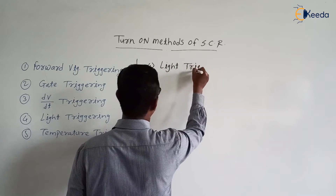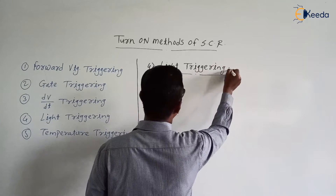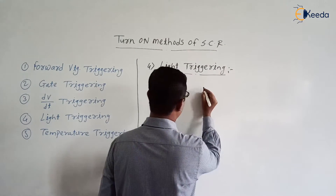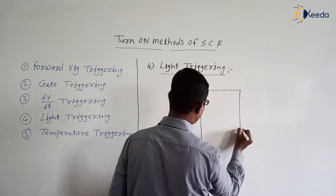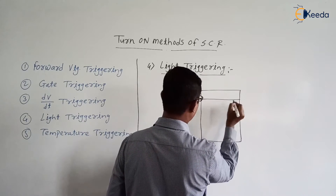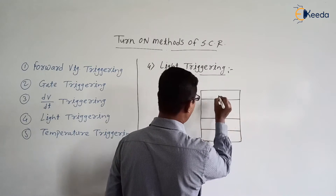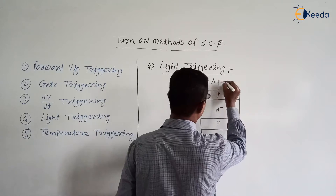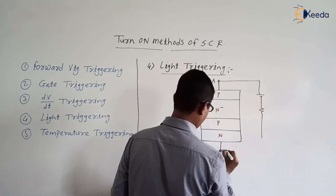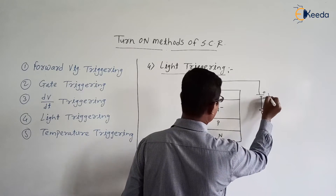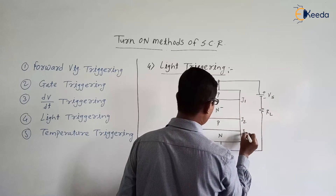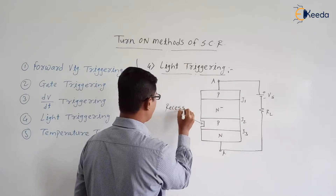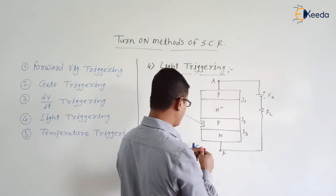Light triggering is the special method of triggering which is generally used in LASCR, that is a Light Activated Silicon Controlled Rectifier. Recall the SCR structure — it is a PNPN structure. Here we have the anode and cathode of the SCR in forward bias mode, with source voltage Vs. The junctions are J1, J2, and J3. We are not having any problem with junctions J1 and J3, but we are having a problem with junction J2, because junction J2 is in reverse bias mode.